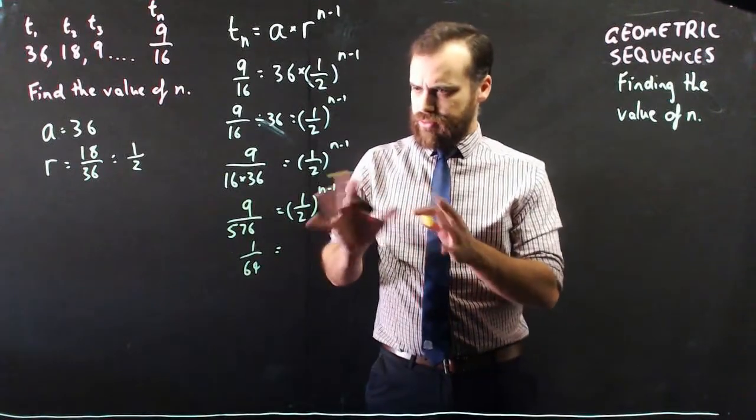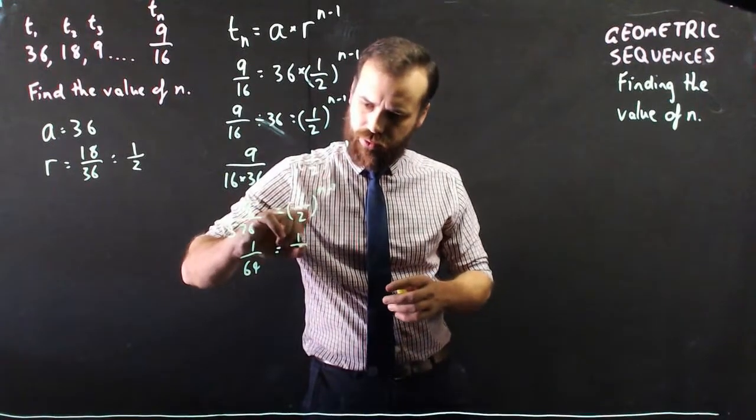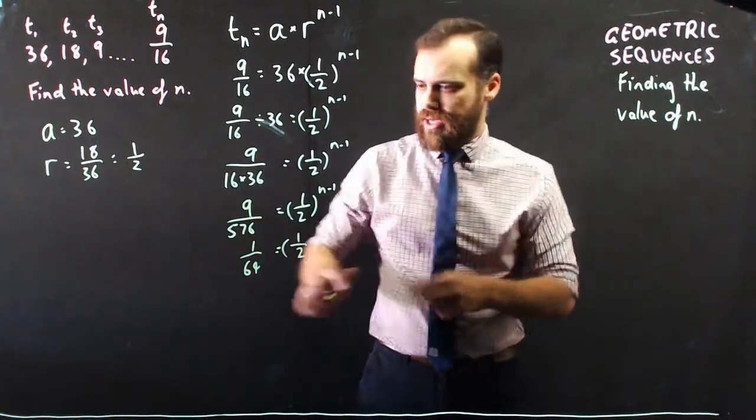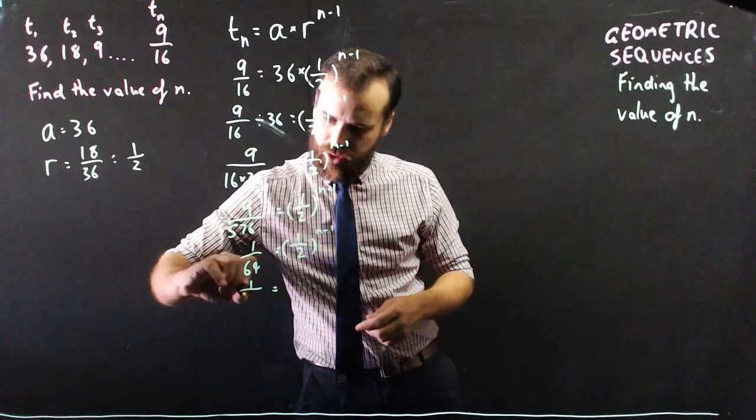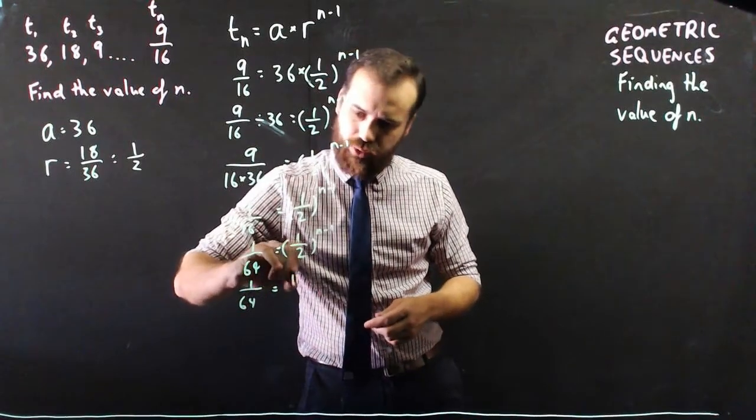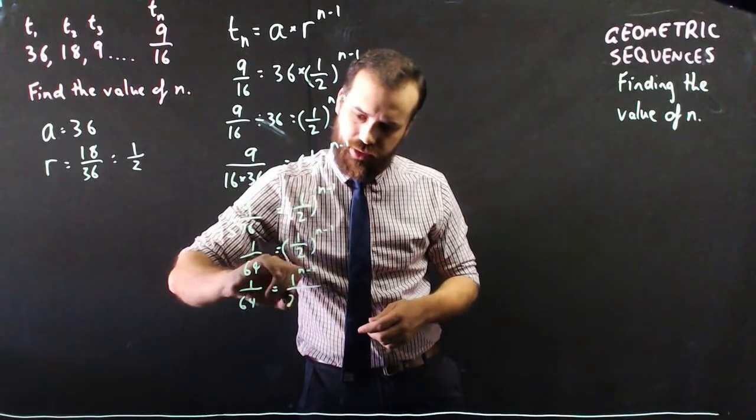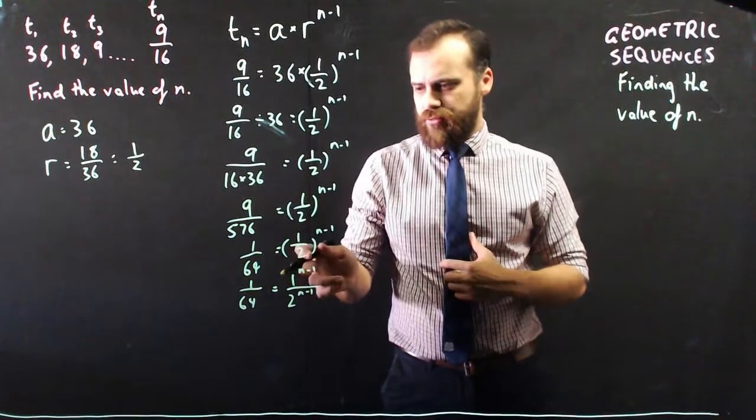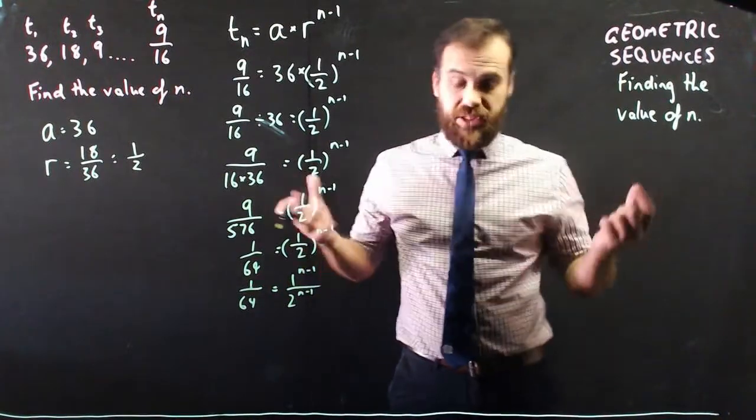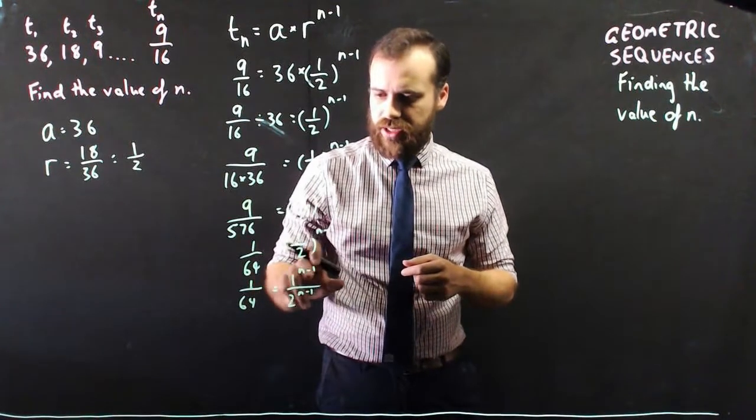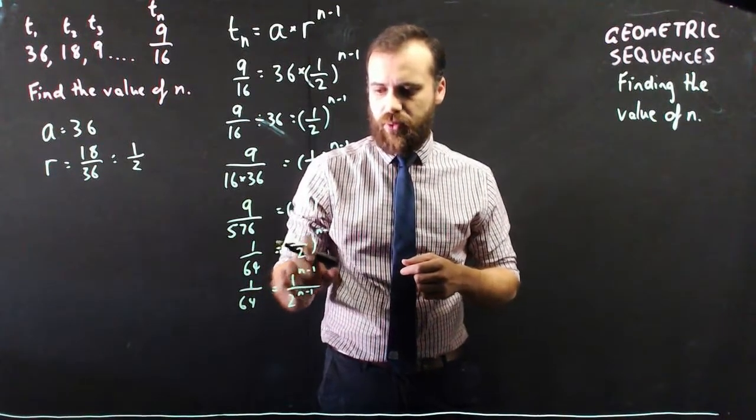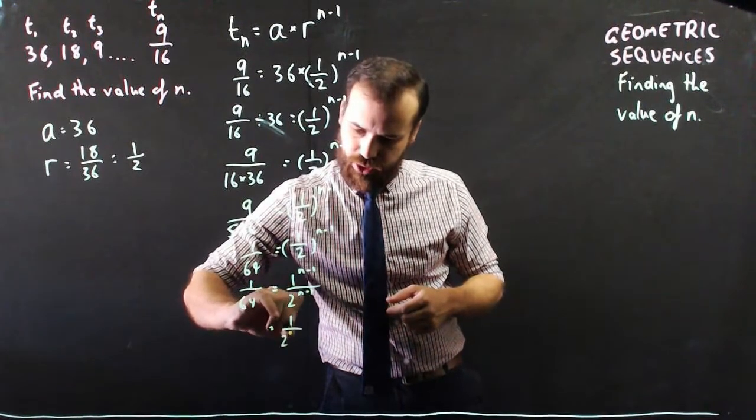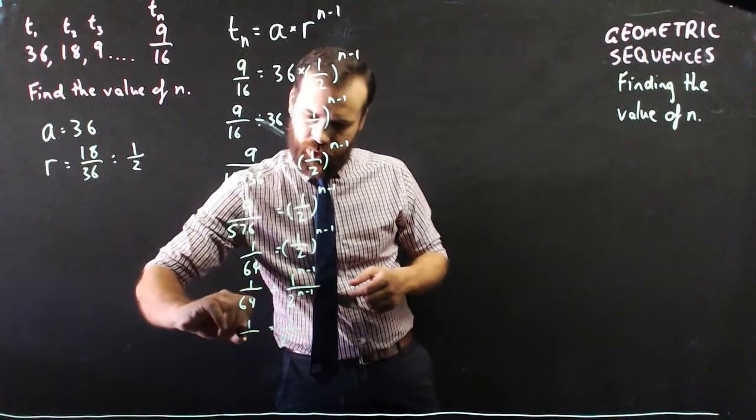Okay, getting there. One half n minus 1. Now, that's going to be the same as 1 on 64 equals 1 to the n minus 1 over 2 to the n minus 1. Okay, so 1 raised to the power of anything is going to be 1. So we don't really need the n minus 1 here for the 1. So we can just say that 1 over 2 to the n minus 1 equals 1 on 64.